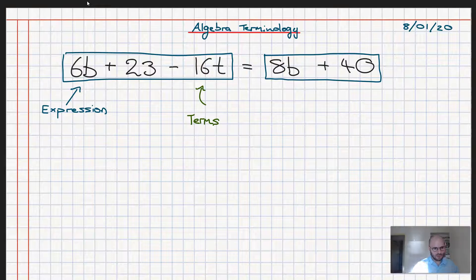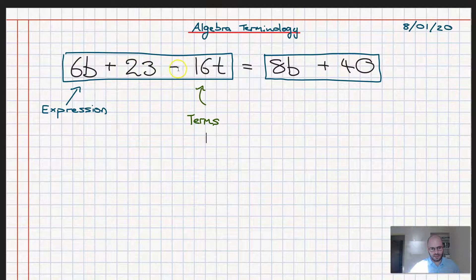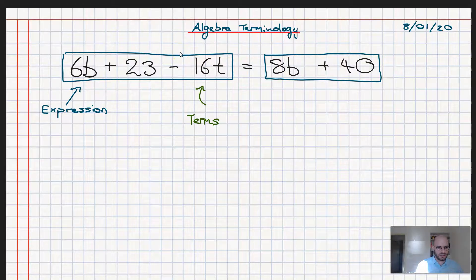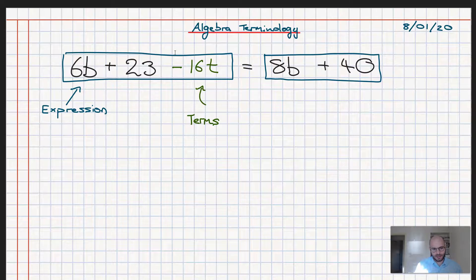So in this case, on the left hand side here, the expression on the left, the 6b, that is a term, the 23, that is also a term, and the negative 16t, we also call that a term. Notice I include the negative in with the 16t. The negative actually belongs to that 16 and that t. So these are all a package deal together. So minus 16t, that is one term.